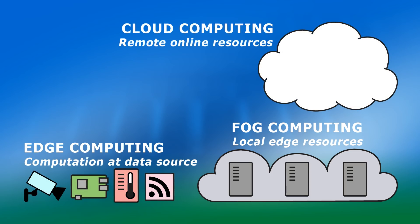Cisco has also introduced the term fog computing, which it describes as a standard that defines how edge computing should work, and which facilitates the operation of compute, storage, and networking services between end devices and cloud computing data centers. What this means is that fog computing refers to resources that lie close to the metaphorical ground — between the edges of a network and the remote cloud. For example, at a factory, some edge sensors communicate with local fog resources, which in turn communicate as necessary with a cloud data center. It should be noted that the term fog computing is mainly used by Cisco and is viewed by some as a marketing term, rather than as an entirely distinct paradigm to edge computing.